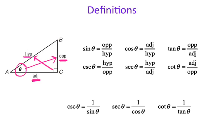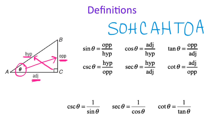For sine, cosine, and tangent, the best way to remember that is to remember SOHCAHTOA. Hopefully that phrase sounds familiar. So sine is opposite over hypotenuse, cosine is adjacent over hypotenuse, tangent is opposite over adjacent. Just make sure you spell SOHCAHTOA correctly, otherwise it kind of defeats the purpose.